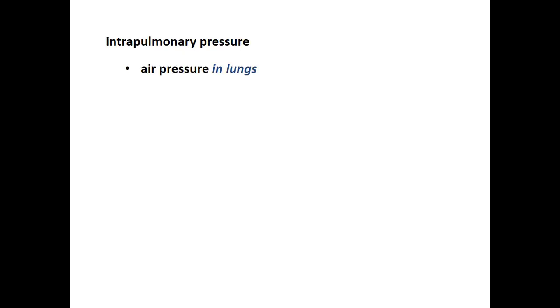Intrapulmonary pressure is the air pressure in the lungs — within the alveoli — and this changes. Unlike atmospheric pressure, intrapulmonary pressure varies with lung volume. When you have the same number of air molecules in a larger volume, the air pressure will be lower. When you compress those same air molecules into a smaller volume, the air pressure in the lungs will be higher.